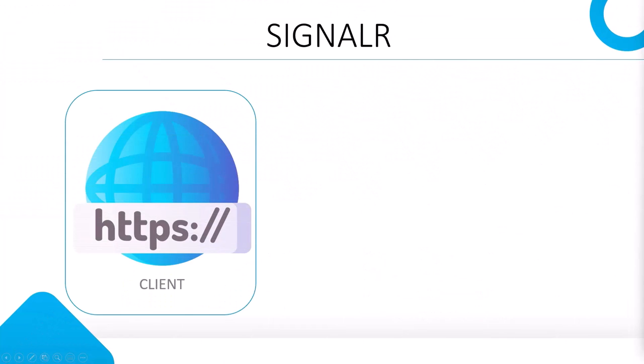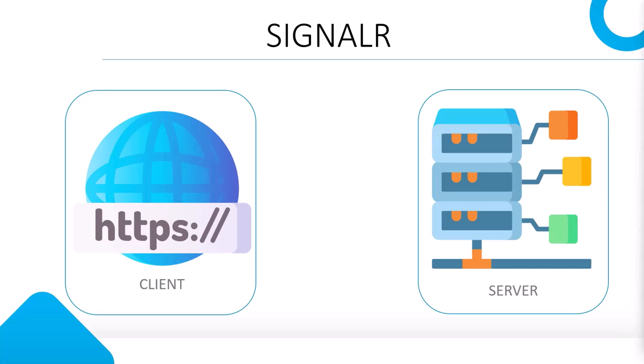SignalR has two pieces: one is the client side and the other is the server side. Both are integral pieces of the SignalR application. SignalR will have a server component which we will call a hub, and then there can be many SignalR clients that communicate with the SignalR hub in real time. We will be exploring all of this throughout the course and everything will make much more sense.